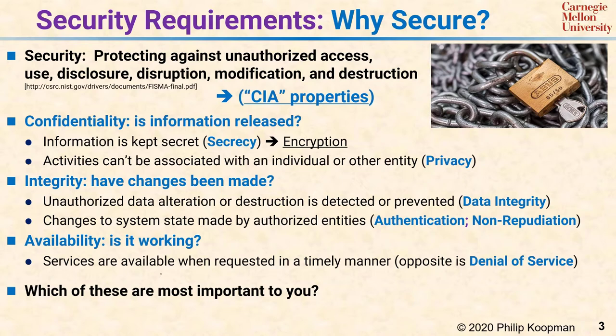There are many other concepts related to security beyond these, but this set provides a broad overview of the types of issues security deals with. Which of these CIA properties matters to you depends on your system. Often in embedded systems, data integrity matters more than secrecy. For example, while privacy is nice, you might care much more about someone changing your thermostat setting to freeze your pipes in the winter than about whether your utility company knows your exact thermostat setting.